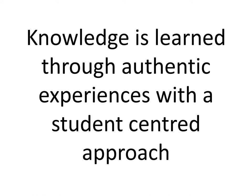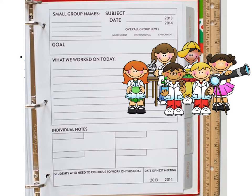Point two: knowledge is learned through authentic experiences with a student-centred approach. Authentic experiences relate to real-life learning. It encourages students to be hands-on in their learning, creating tangible and useful products which they can share with their community within the school, in their home environment and globally. The teacher is responsible for providing a motivational challenge which reflects the interests and needs of the child. This includes timelines, planning, resources and support in the form of facilitation and ongoing feedback so both student and teacher can assess their progress.